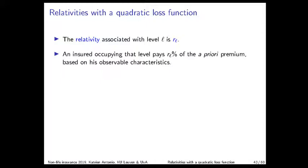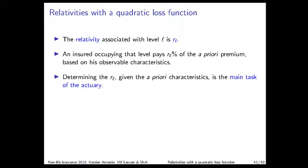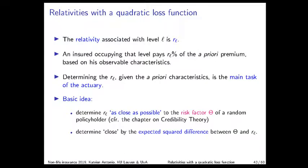The determination of the RLs — the relativities in a scale — given a certain a priori classification system, is the main task of the actuary. The idea is to make those relativities as close as possible to the risk factor theta of a policyholder picked at random from the portfolio. This closeness is usually measured by the expected squared difference between theta and RL, though other loss functions can be used too.